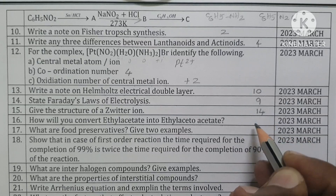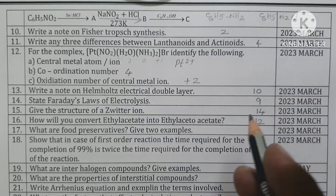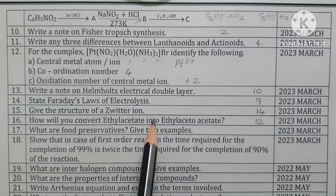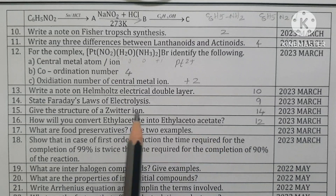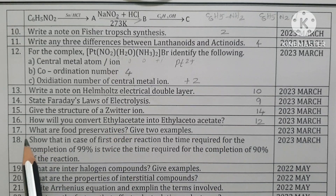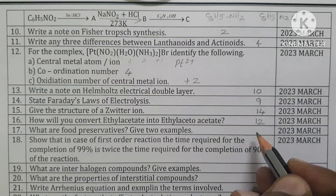Lesson number 14 — zwitter ion. Lesson number 12 — carboxylic acid, ethyl acetate conversion. What are food preservatives? Give two examples — unit number 15.